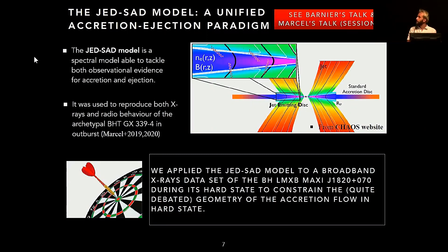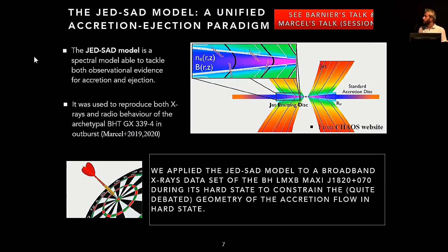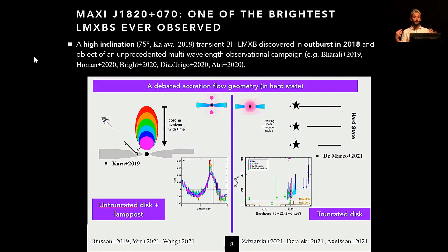From a nice series of papers by Marcel and Samuel Barnier, which I invite you to see from yesterday, they were also able to reproduce not only the X-ray but also the radio spectral behavior of GX 339-4. So this model is really a full accretion and ejection model. We wanted to apply this model to another system, MAXI J1820, which was discovered three years ago and was the object of an unprecedented multi-wavelength campaign — it's a gold mine for papers.